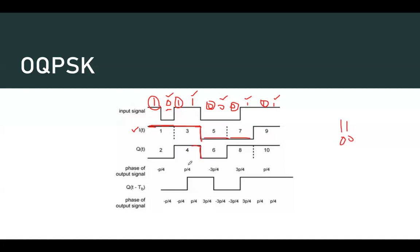But in case of OQPSK, we introduce a half-bit delay — the Q channel signal is shifted by half a bit period. So the signal doesn't start at the same point; there is a delay. Whenever there is a transition in the odd bit stream, there is no simultaneous transition in the even stream — the even stream transitions only after a half-bit delay. As a result, we do not allow two bits to change at the same time in OQPSK; only one bit is allowed to change at a time, and hence we avoid any zero crossing or side lobes.